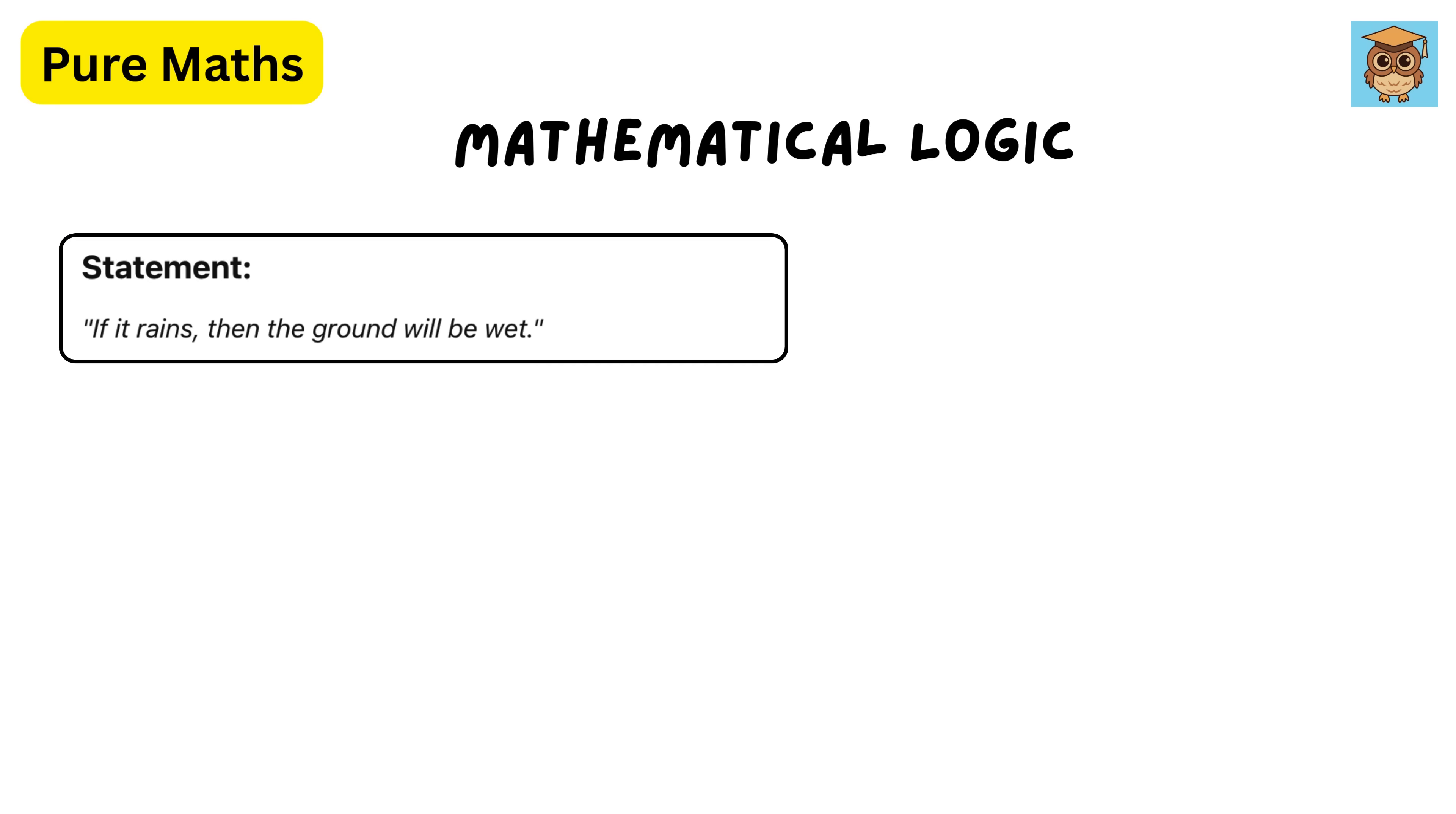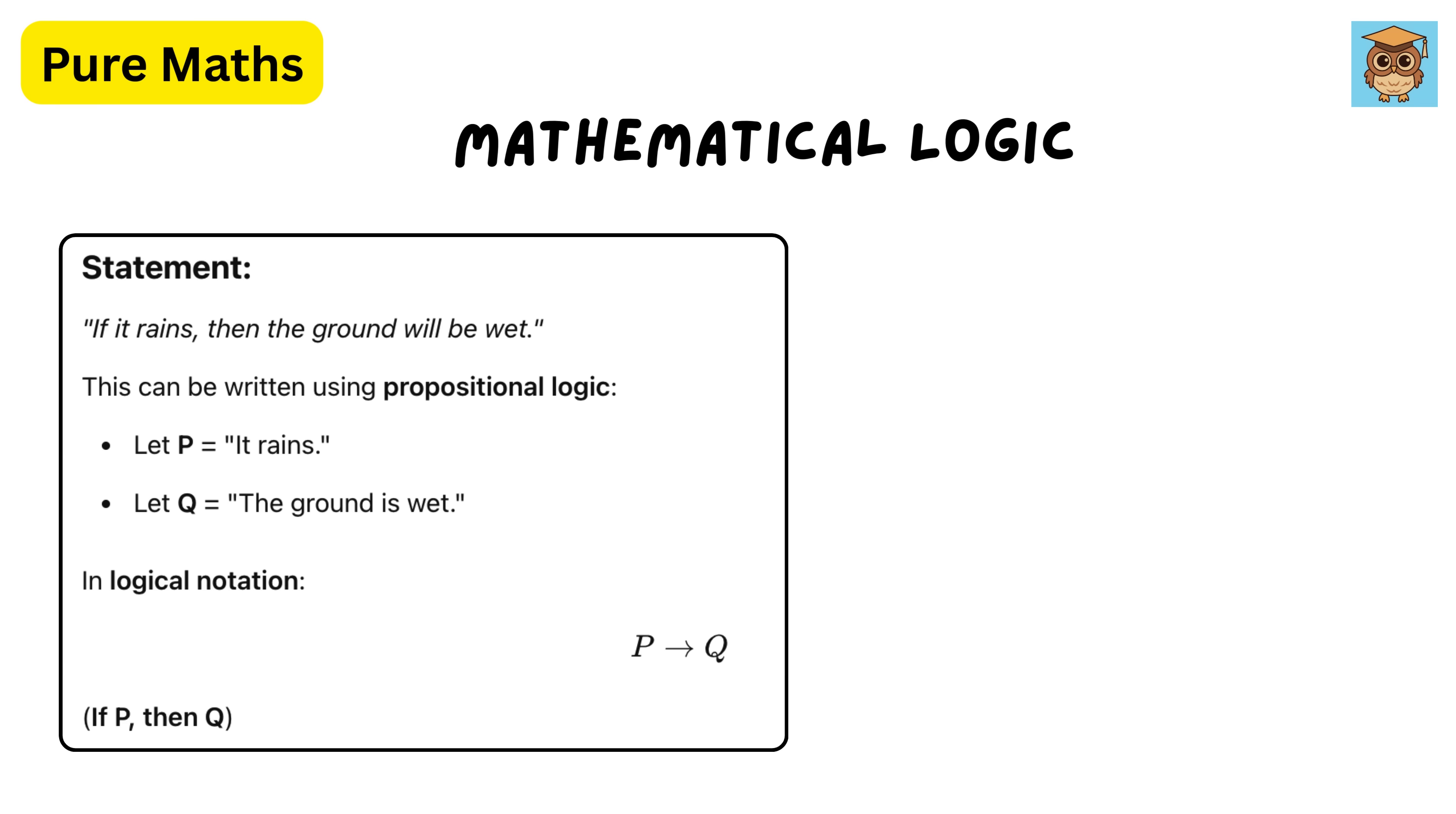Consider a statement. If it rains, then the ground will be wet. If p represents it rains, and q represents the ground is wet, then the statement can be written as p implies q. This means that if p is true, then q must also be true.